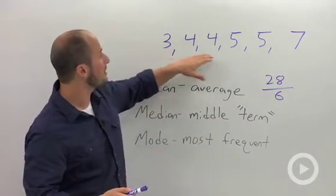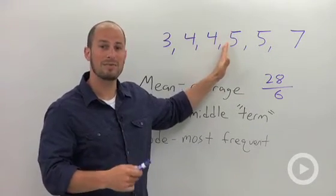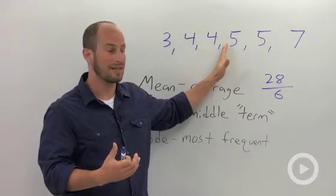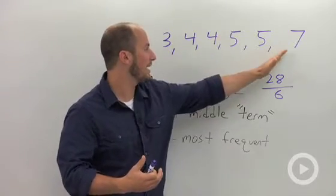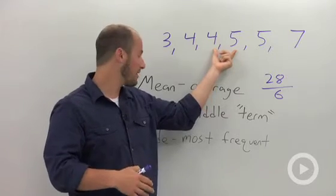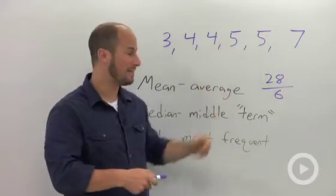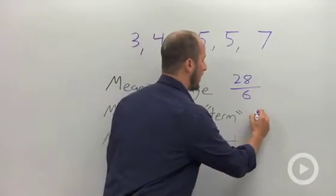So there are 6 terms, which means we don't really have a term directly in the middle. So what we do is we average the 2 terms on either side of it. So we count it up 3, we count it down 3. These are sort of our 2 middle terms, so the median is just going to be the average of those 2 terms. 4 plus 5 is 9, 9 divided by 2 is just going to be 4 and a half.